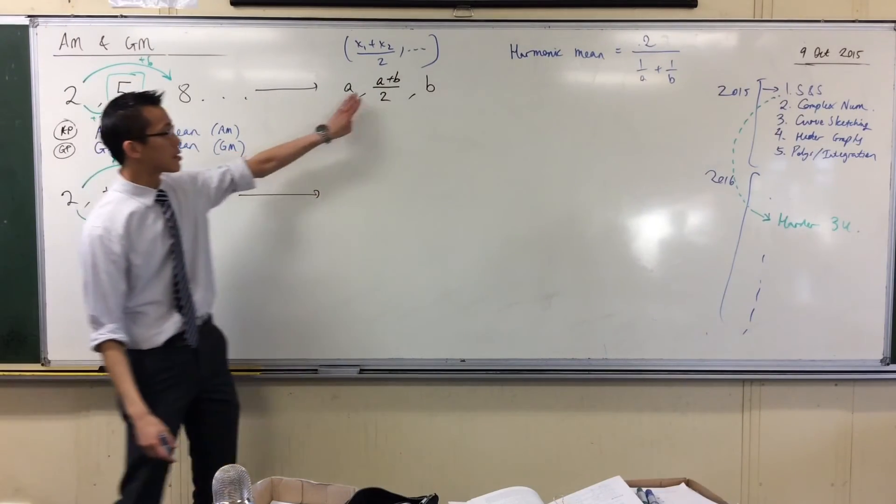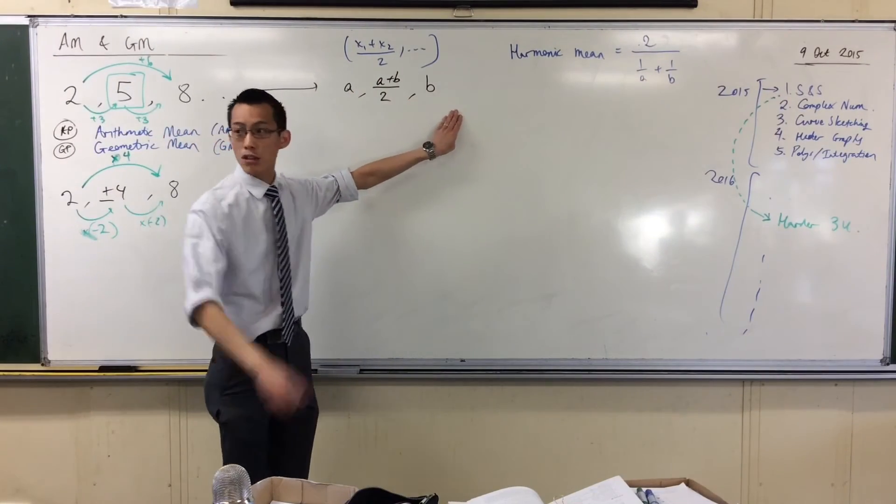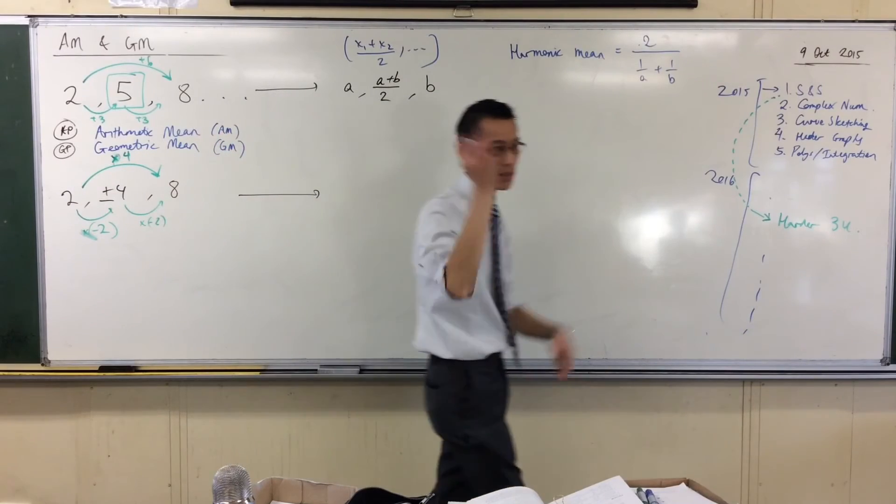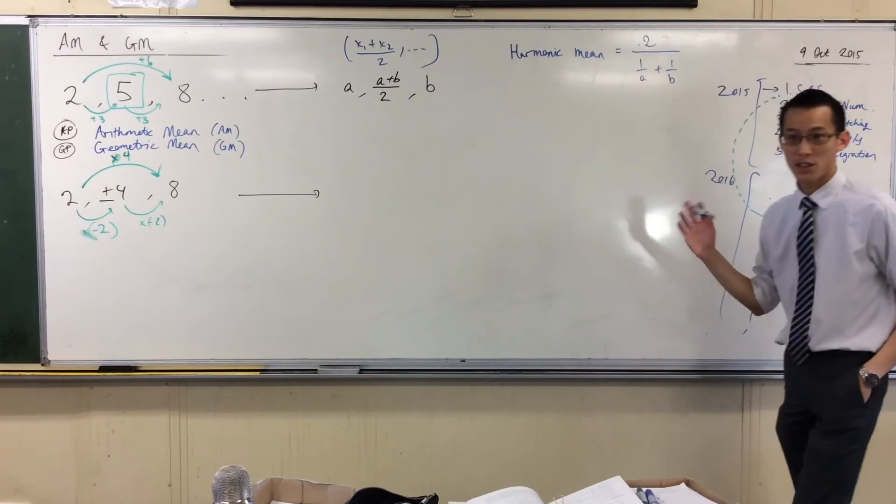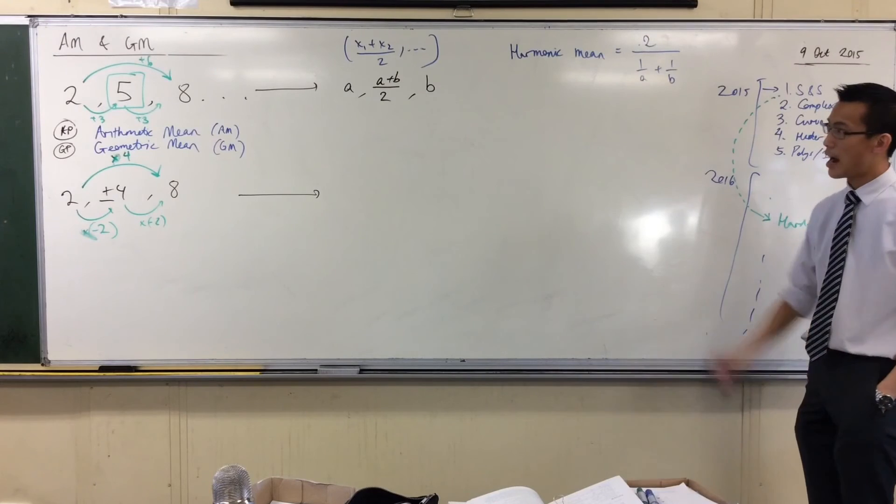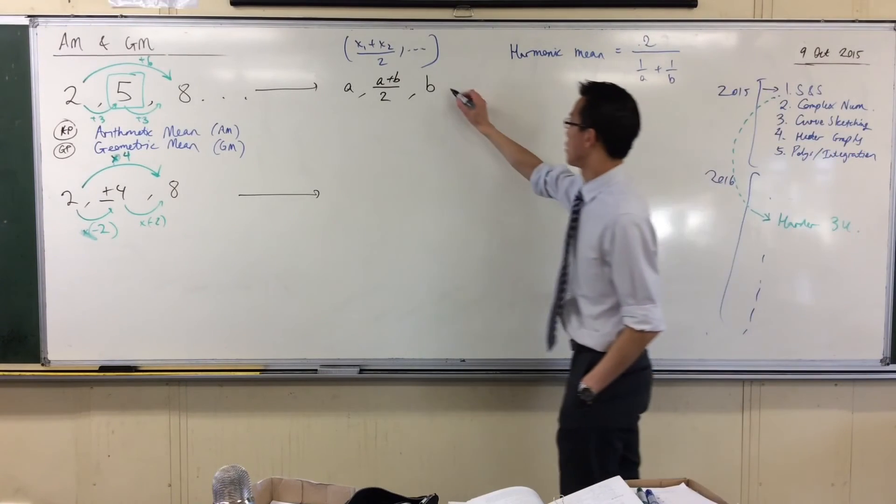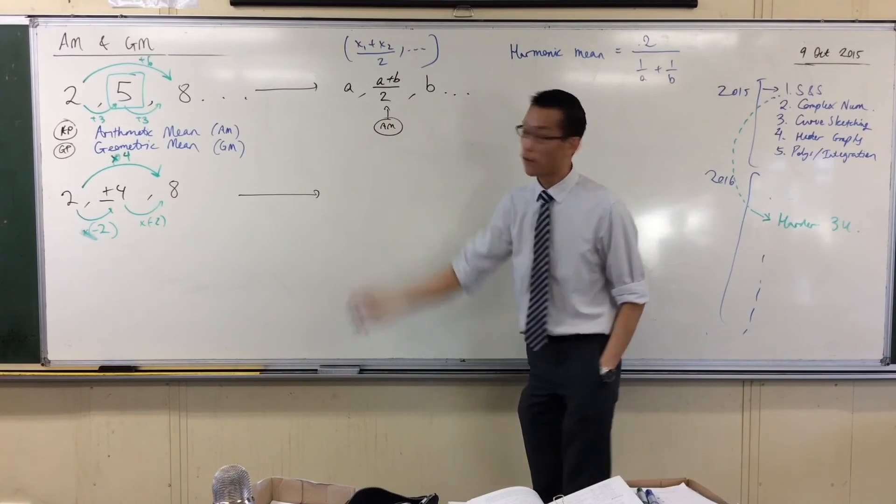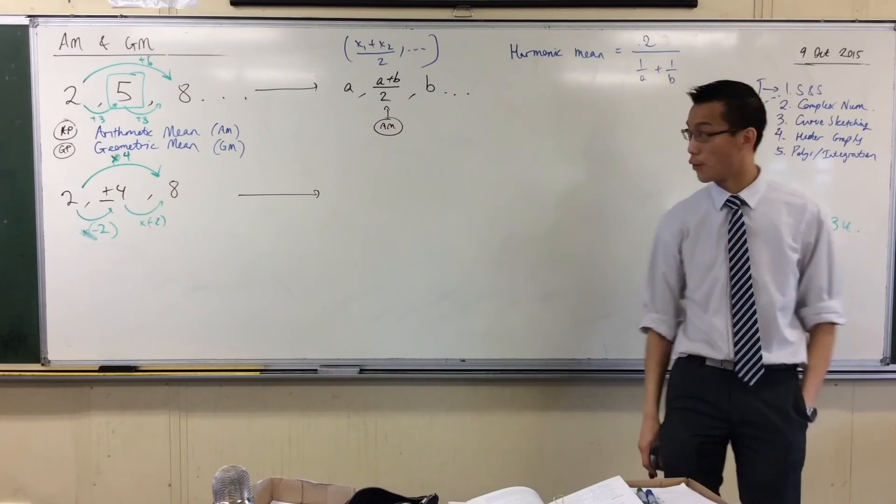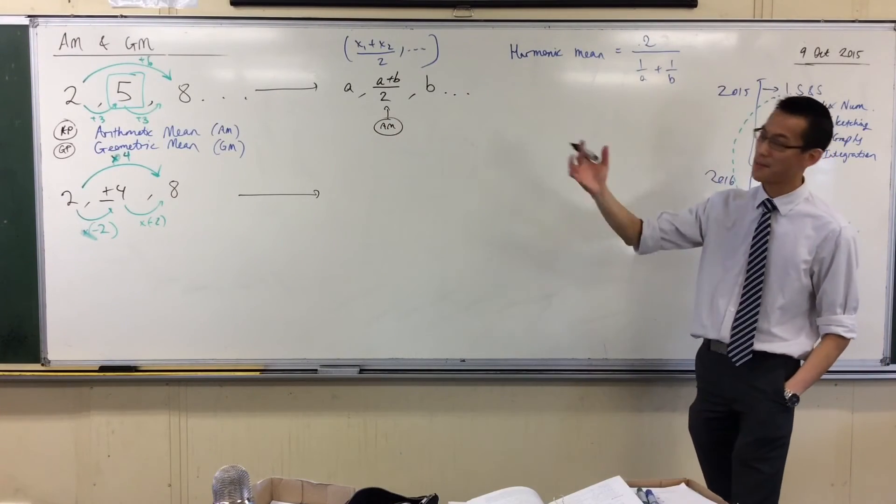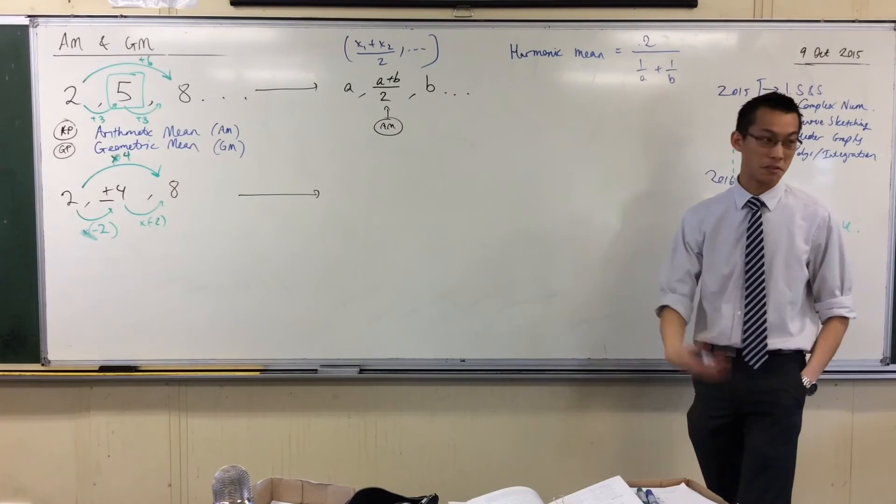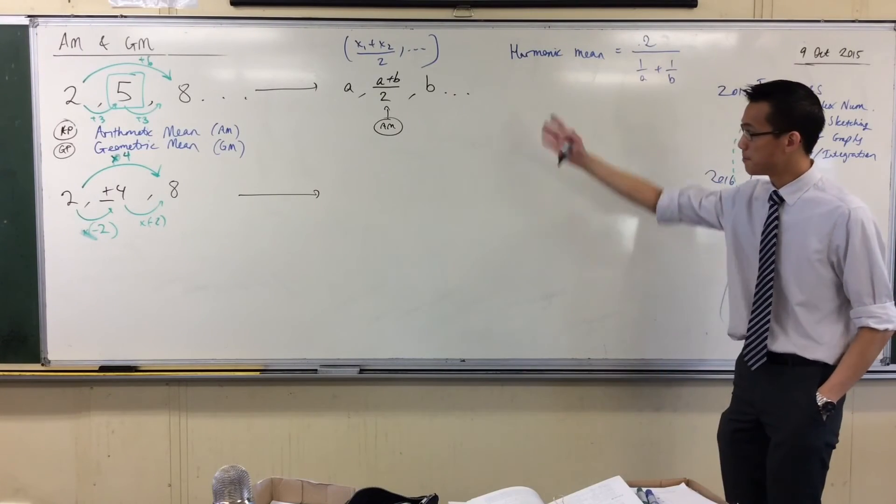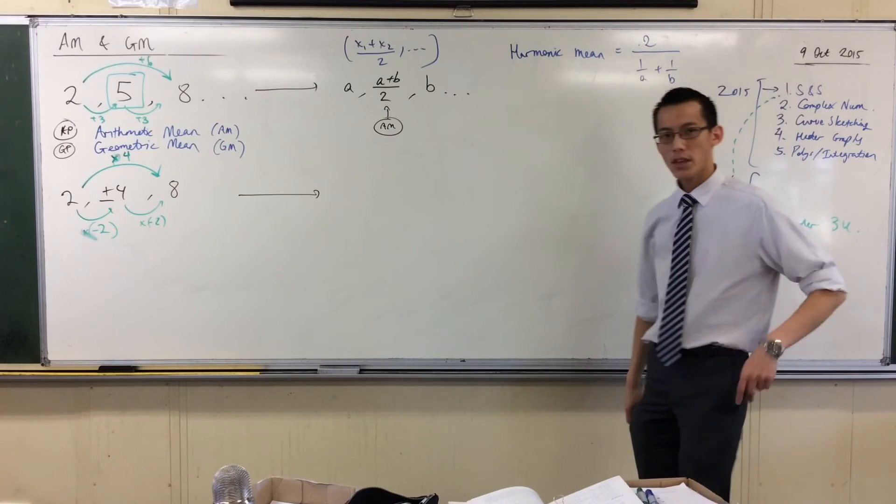This will always be an AP. You can put any numbers you like in there. They can be positive, negative. Anything is going to work. And our 2, 5, 8 example proves it. This is our formula for the AM. That's our formula. Just like we had a formula for the nth term, and we had a formula for, we're going to get quite a few formulas in here. That's the one for the AM.